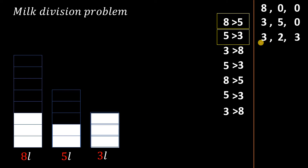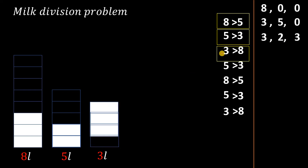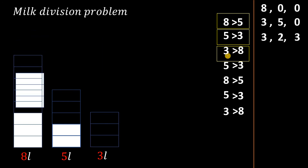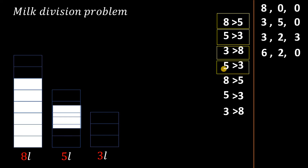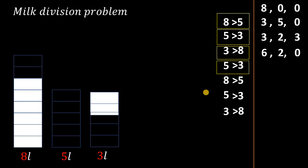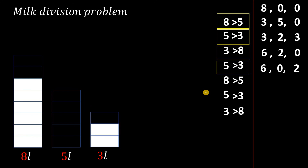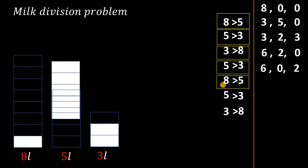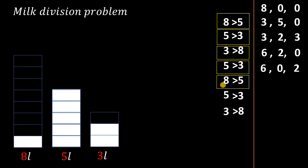Continuing in the same way, we pour the three-liter jar into the eight-liter jar, giving us six liters in the first jar, two liters in the second, and nothing in the third. Then we pour from the five-liter jar into the three-liter jar, then from the eight-liter jar into the five-liter jar, and then from the five-liter jar into the three-liter jar again.